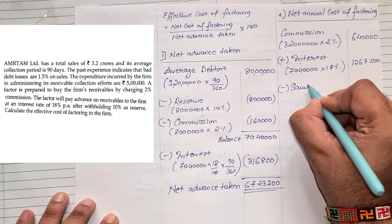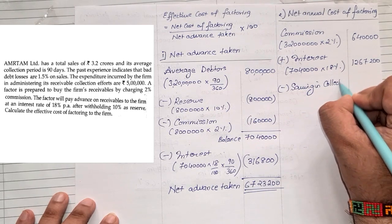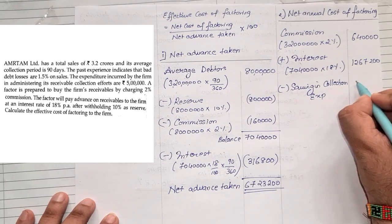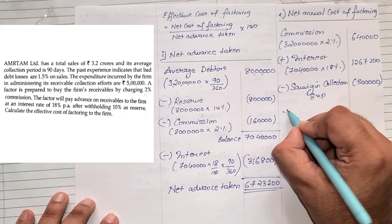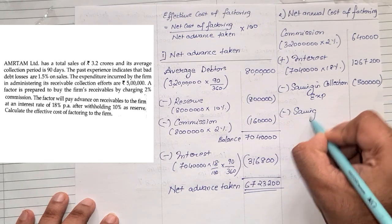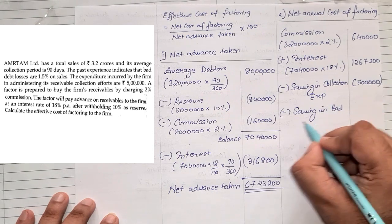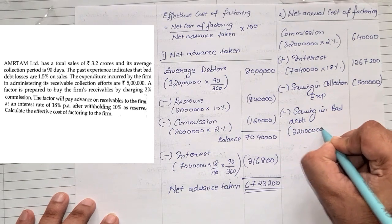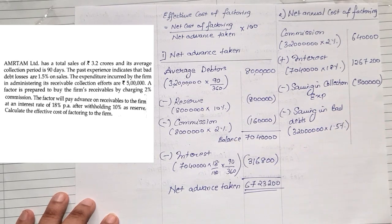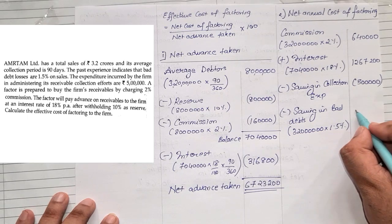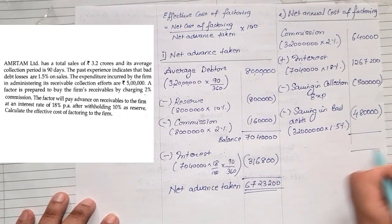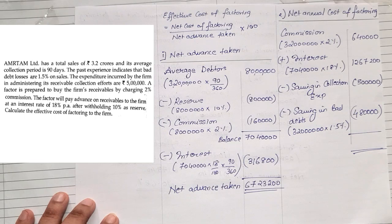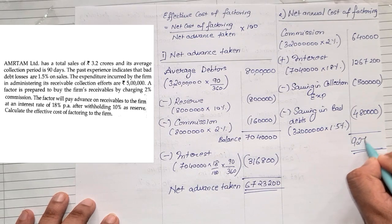From this, we deduct savings. Less saving in collection expenses — the question gives 5 lakhs already incurred, so 5 lakhs gets saved. Less saving in bad debts: bad debts are 1.5%, so 3 crores 20 lakhs into 1.5% equals 4 lakhs 80,000. So: 6 lakhs 40,000 plus 12 lakhs 67,200 minus 5 lakhs minus 4 lakhs 80,000 gives us 9 lakhs 27,200.